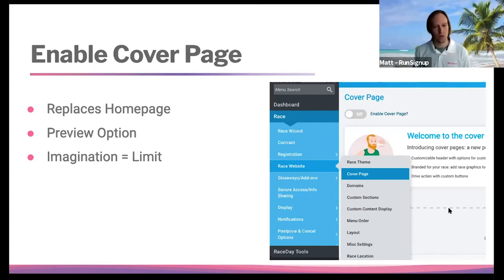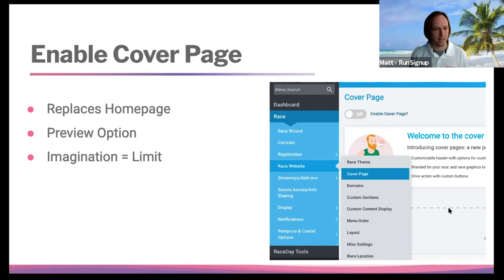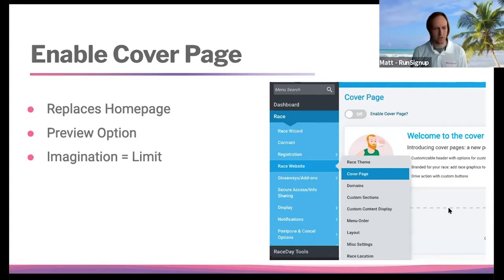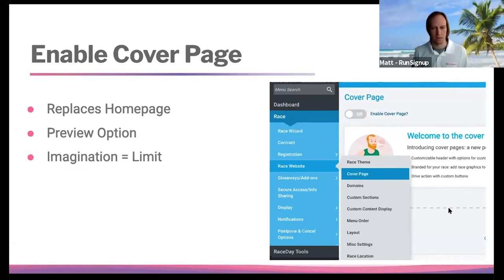The cover page is one of our few features that offers a preview option, so you can test around with it and view it only as the race director — it wouldn't be live. Or when you enable it, you can fully publish the cover page and update it in real time. The race info page that you had as your default landing page will now be replaced by the cover page whenever anybody comes directly to the page from Google. The race info page then becomes a menu item underneath your race menu. With the cover page, imagination is the limit — there are so many customization options and drag-and-drop features.